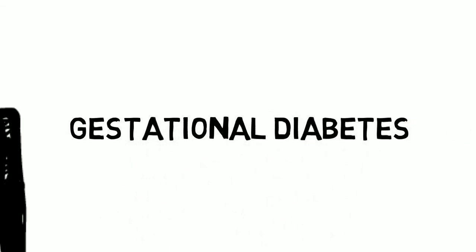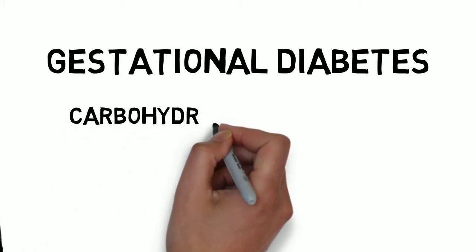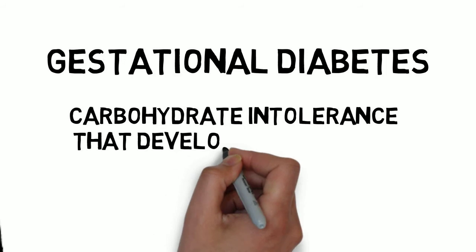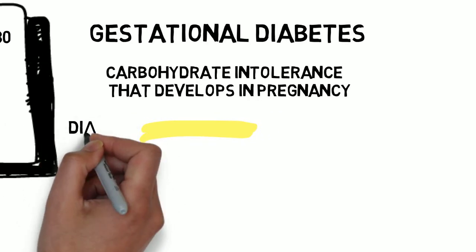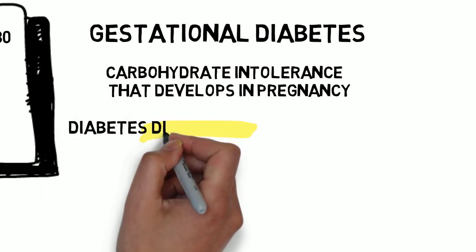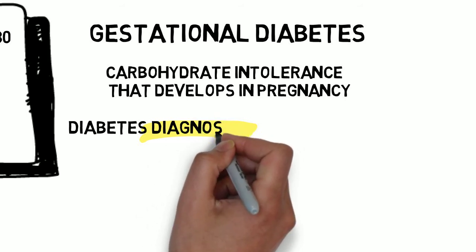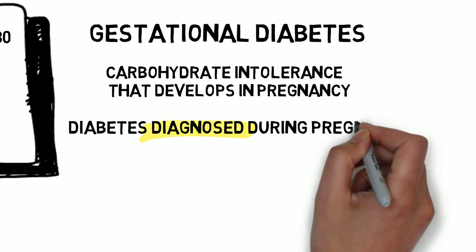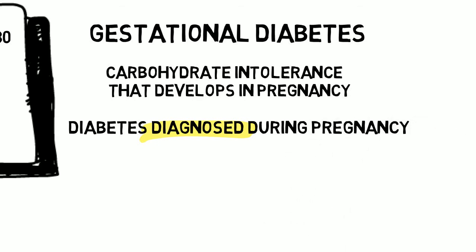First off, what's the definition of gestational diabetes? It's carbohydrate intolerance that develops in pregnancy. Since a lot of patients haven't been screened before pregnancy, it can be challenging to distinguish gestational diabetes from pre-existing diabetes. Technically, without a diagnosis before pregnancy, you can't distinguish them. But you can sure suspect pre-existing diabetes, particularly in someone with a strong family history and obesity and a high hemoglobin A1c, or an abnormal glucose tolerance test early in pregnancy.